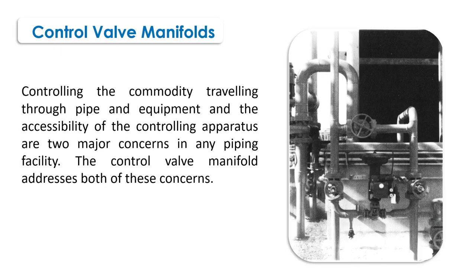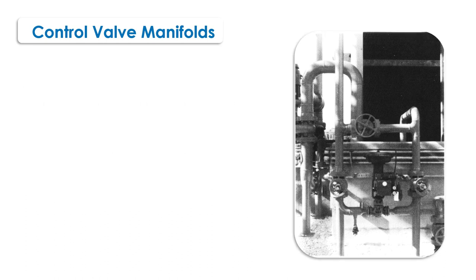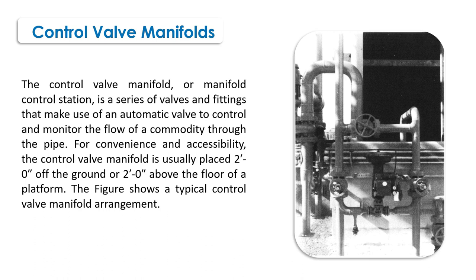Control valve is controlling the commodity traveling through pipes and equipment, and the accessibility of the controlling apparatus are two major concerns in any piping facility. The control valve manifold addresses both of these concerns. The control valve manifold, or manifold control station, is a series of valves and fittings that make use of an automatic valve to control and monitor the flow of commodity through the pipe.